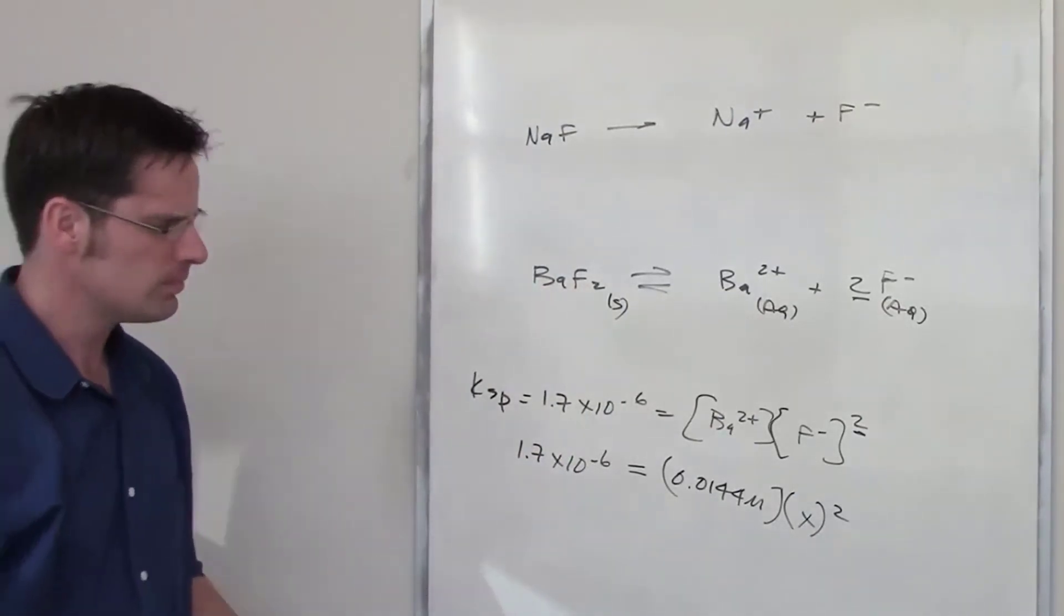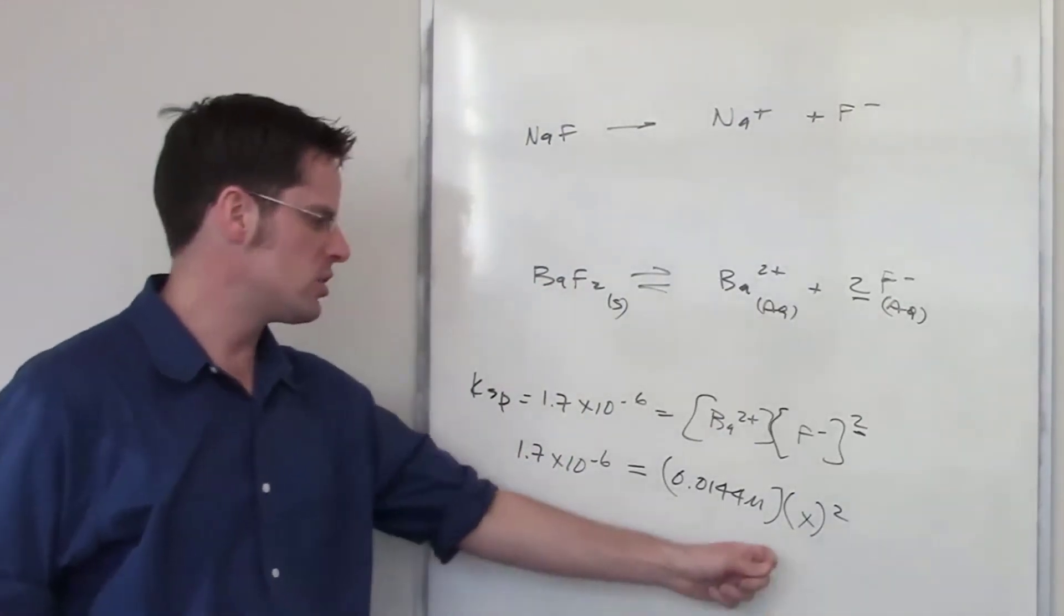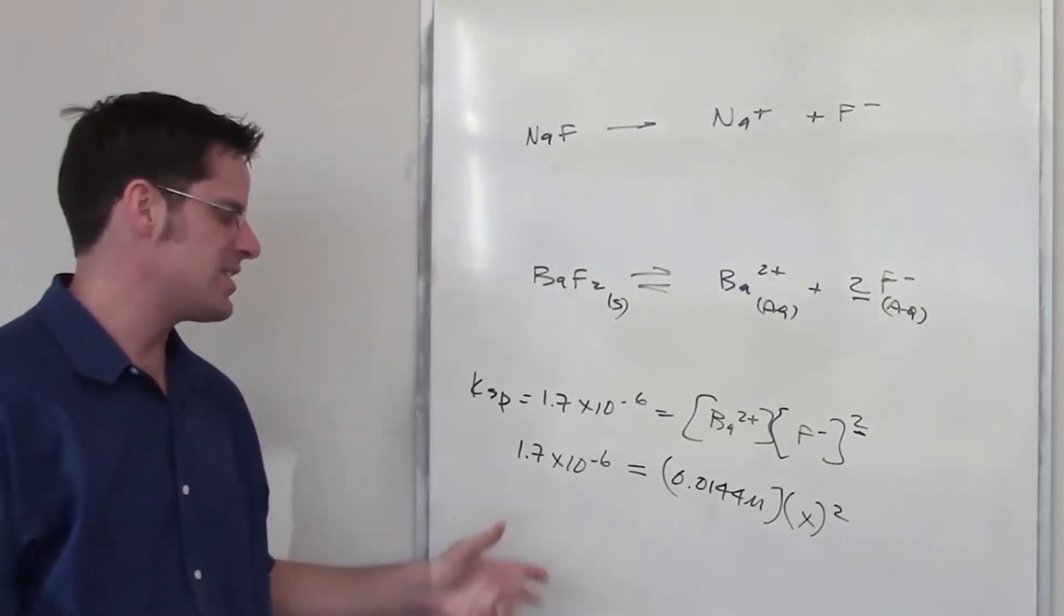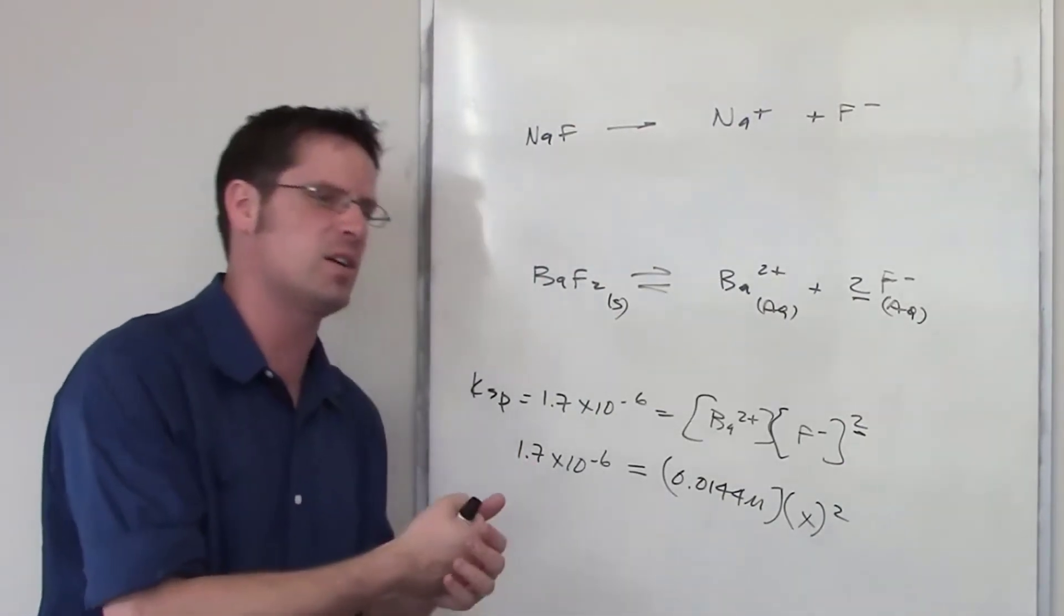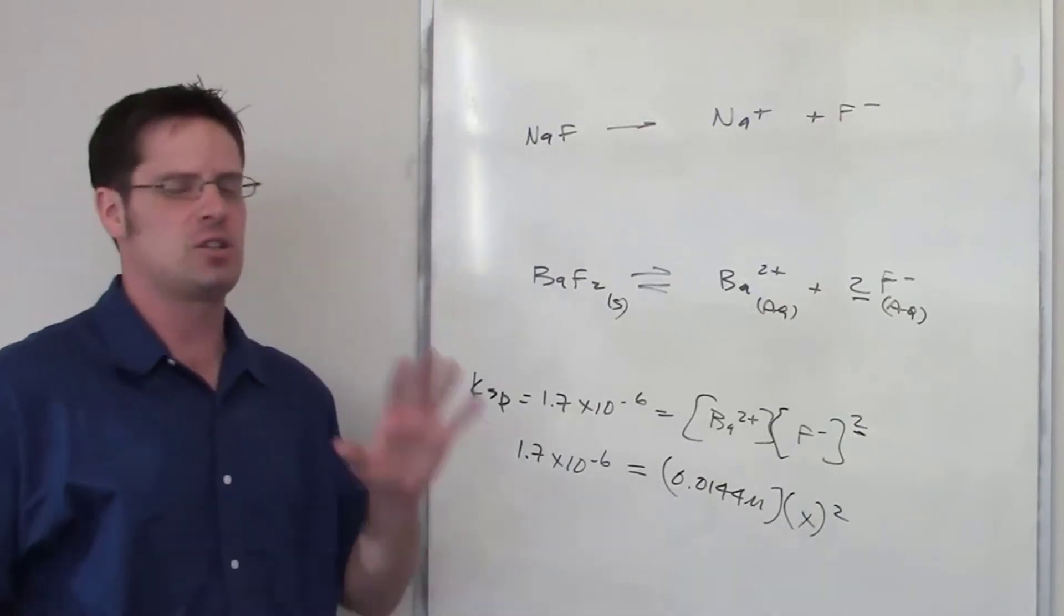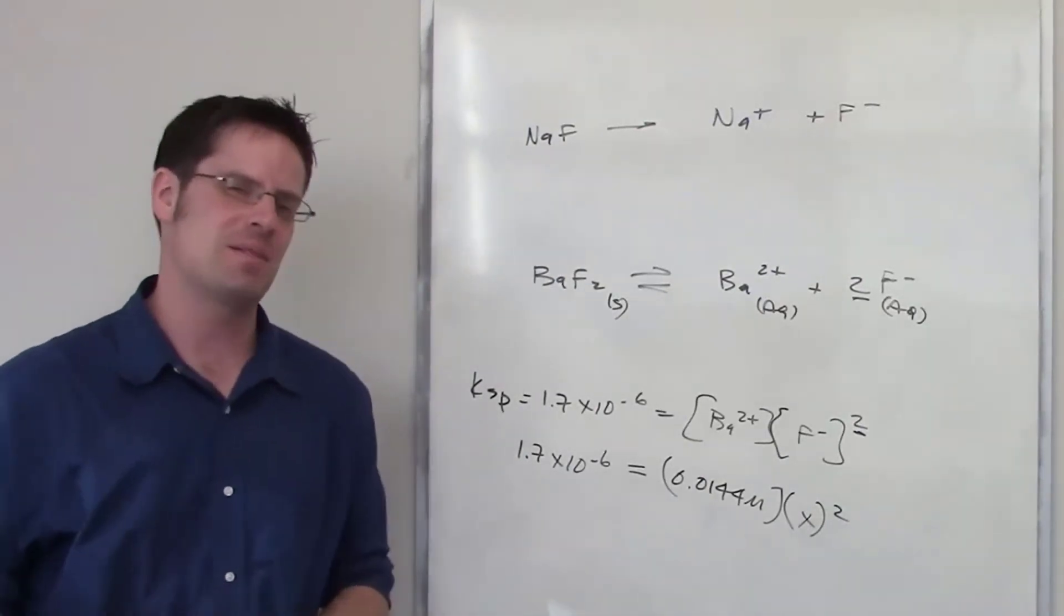Does that make sense? So really all you have to do is solve for x right here and then say whatever x happens to be, once you hit that concentration and go above it, you'll start to get precipitation of barium fluoride.